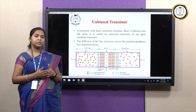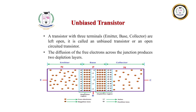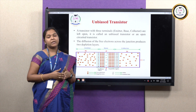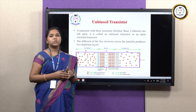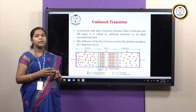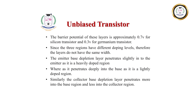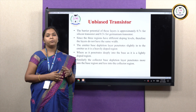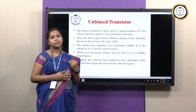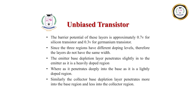When you compare both depletion regions, the width of the emitter-base junction seems to be less when compared with the collector-base junction. The barrier potential of this unbiased transistor depends on the material chosen for fabrication. If you choose silicon material, it will be around 0.7 volts, and if you choose germanium material, the barrier potential will be around 0.3 volts. In practice, this unbiased transistor is not used as it leads to poor conduction and poor amplification — it cannot amplify the weak signal to a very long distance.